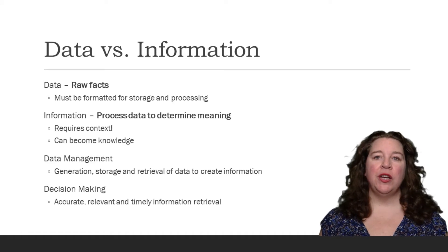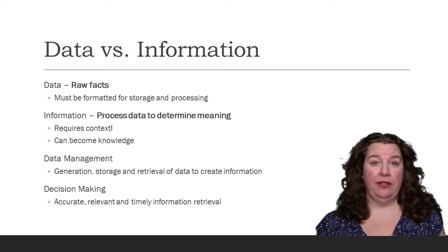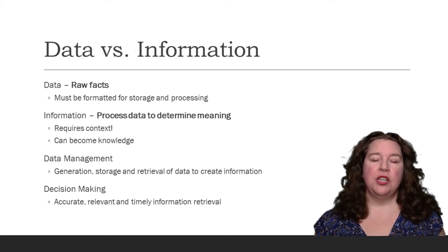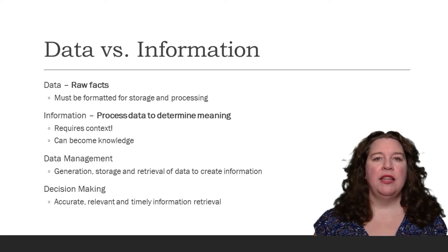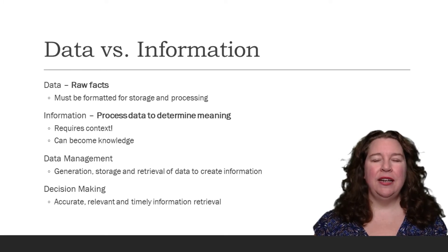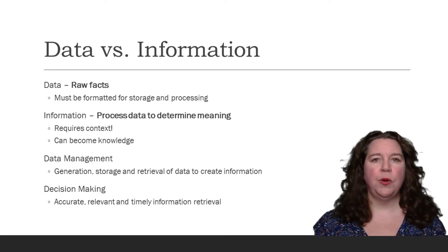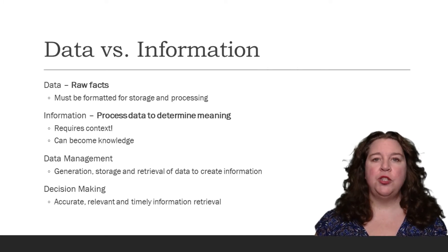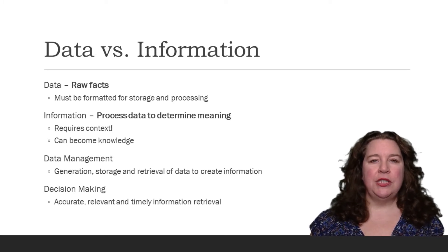The first thing we're going to cover is the difference between data and information. There is a big difference between them. Data is just raw facts — they must be formatted and they don't mean anything in and of themselves. For example: 5,000, 123, 240 Main Street — they don't mean anything. They're just facts.